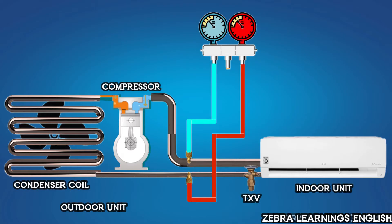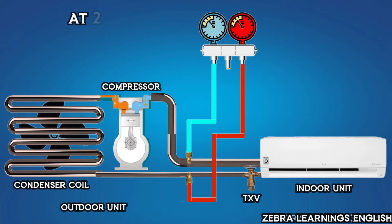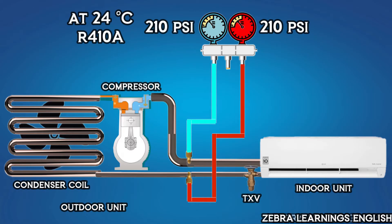When the AC unit is off, the refrigerant pressure is equal on its low-pressure side and high-pressure side. For example, at 24 degrees Celsius, when our R-410A unit is off, the refrigerant pressure on both the low- and high-pressure side is 210 PSI. When the temperature increases, the pressure of the refrigerant also increases. The pressure of the refrigerant at 27 degrees Celsius is 236 PSI.